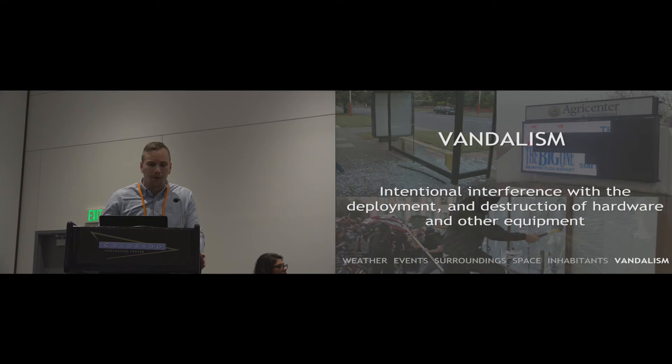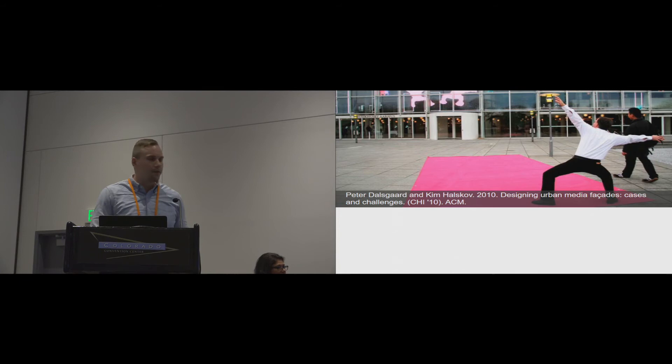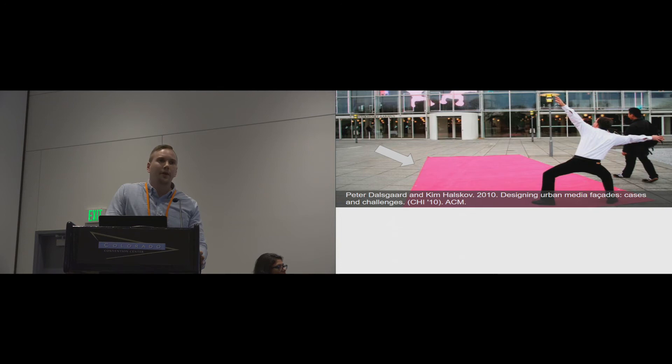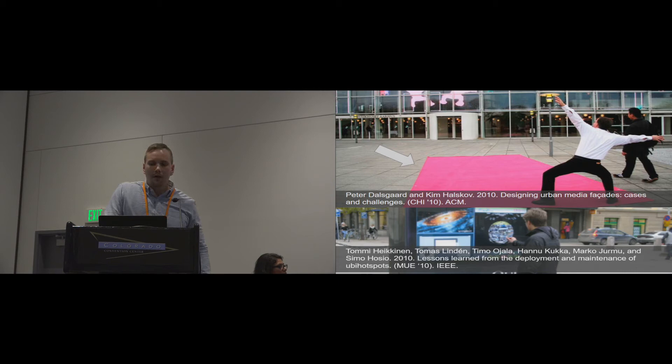As the sixth and final category, we consider vandalism — referring not only to destruction of hardware and equipment, but also intentional interference with the deployment. In the work by Dalsgaard and Halskov, someone tried to remove a colorful carpet from the ground of an outdoor media facade, possibly assuming it was enabling interaction, when in reality it simply marked the interaction area. A more serious example by Heikkinen et al.: a safety glass on one of their UBI hotspots in Oulu was purposefully broken, resulting in two weeks of downtime and around €7,000 in repair expenses.